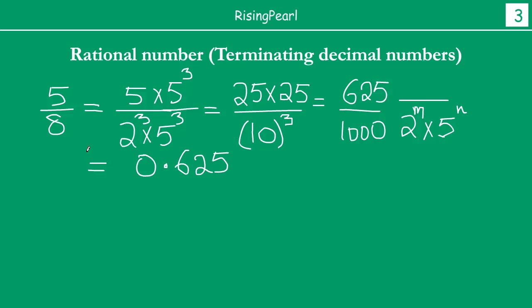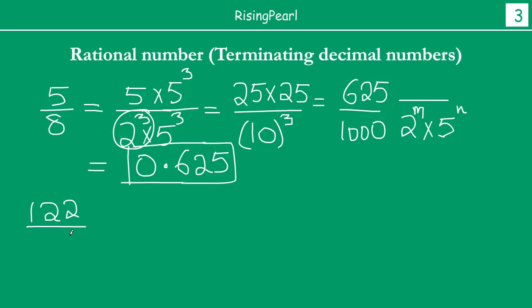And that is nothing but 0.625. So indeed, we were given a denominator of 2 to the power 3, which is 8, and we got a terminating decimal expansion. Let's take one more example — this time we will do 122 divided by 25.